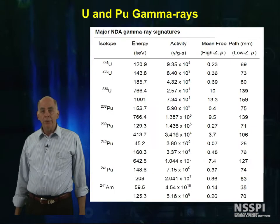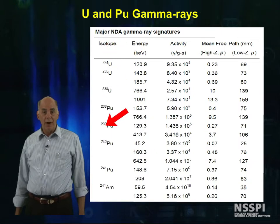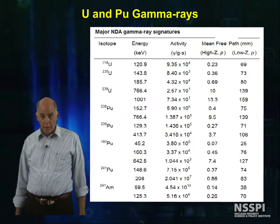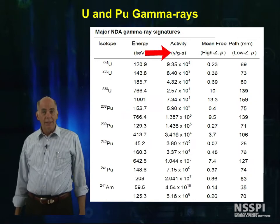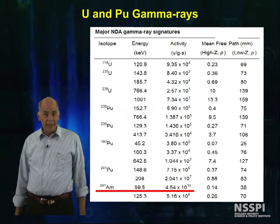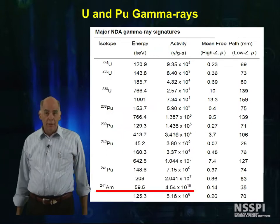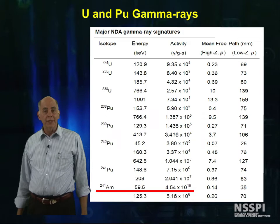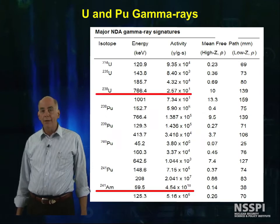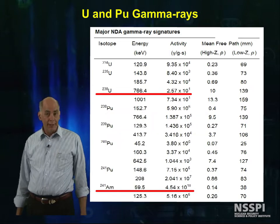Uranium and plutonium also emit gamma rays, and this table lists the most prominent gamma rays as a function of isotope. Notice that the activity given in gammas per gram per second varies wildly, ranging from 10 to the 10th gammas per second per gram for americium-241 to about 25 gammas per second per gram for uranium-238.